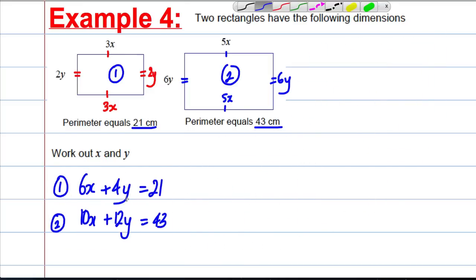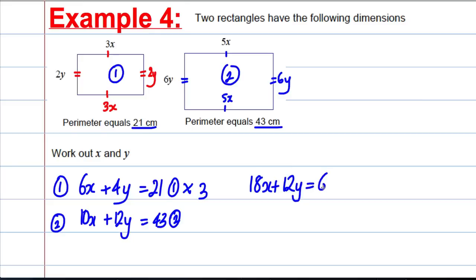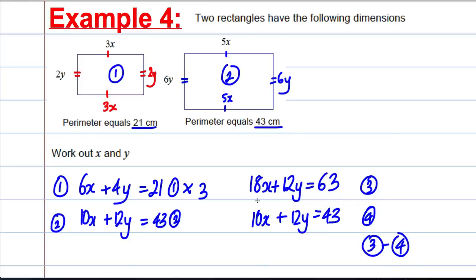I want the numbers in front of either X or Y to be the same. Multiplying equation 1 by 3 gives equation 3: 18X plus 12Y equals 63. Equation 2 stays as equation 4: 10X plus 12Y equals 43. Subtracting equation 4 from equation 3: 8X equals 20, so X equals 20 divided by 8, which is 2.5.